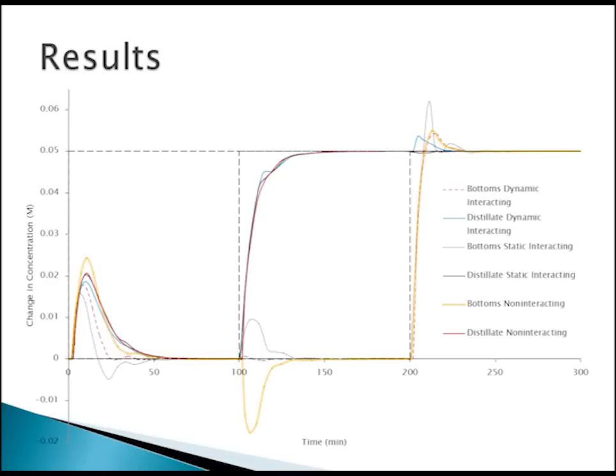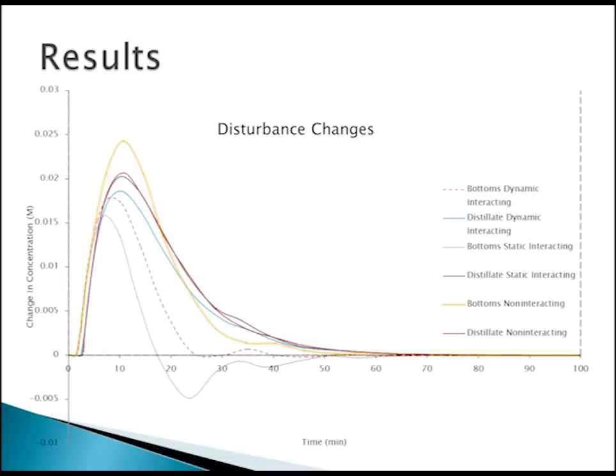Our results cover three step tests we performed. The first was a 0.05 step in the feed disturbance. The second was 0.05 in the distillate. The third was 0.05 in the bottoms. Rebecca will tell you more about each of these.